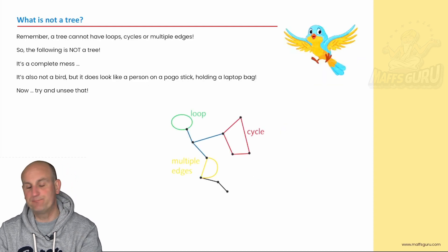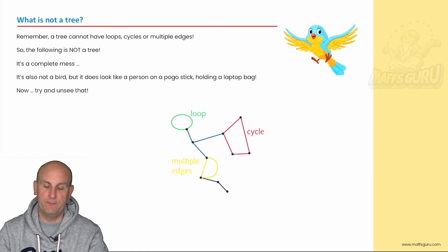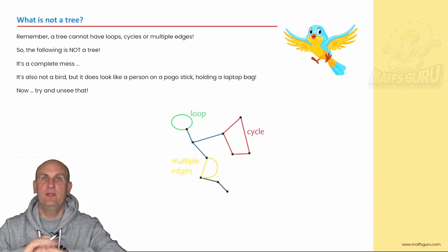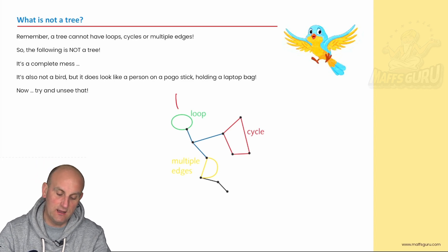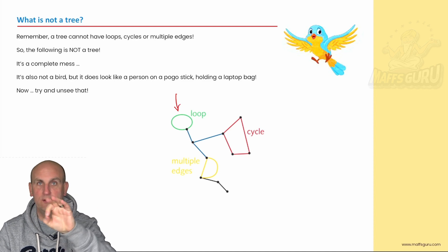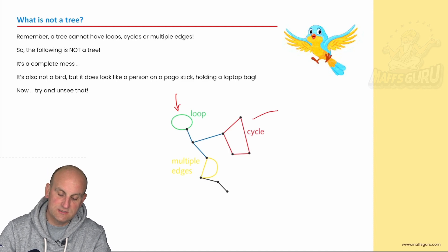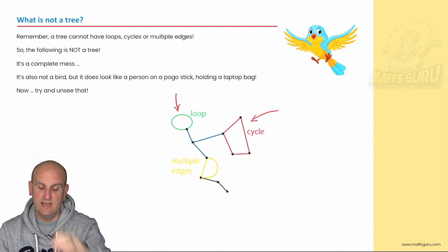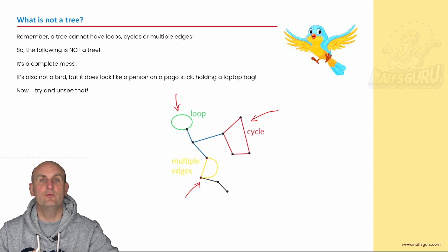Now obviously here, and I try and unsee this now, I can see a guy with a laptop bag on a pogo stick. Can you see it? Because you're never going to be able to unsee it. But in here, there are all the things that make this not a tree. So as you can see, here I talked about the loop, right? You can't have a loop where it starts at a vertex and goes back to that same vertex without passing through anything else. You can't have a cycle, right? What I'm doing there is I'm starting at one vertex and going all the way through other vertices and ending up at the same vertex. And obviously here, there are multiple edges because there are two ways to go between those two points there.